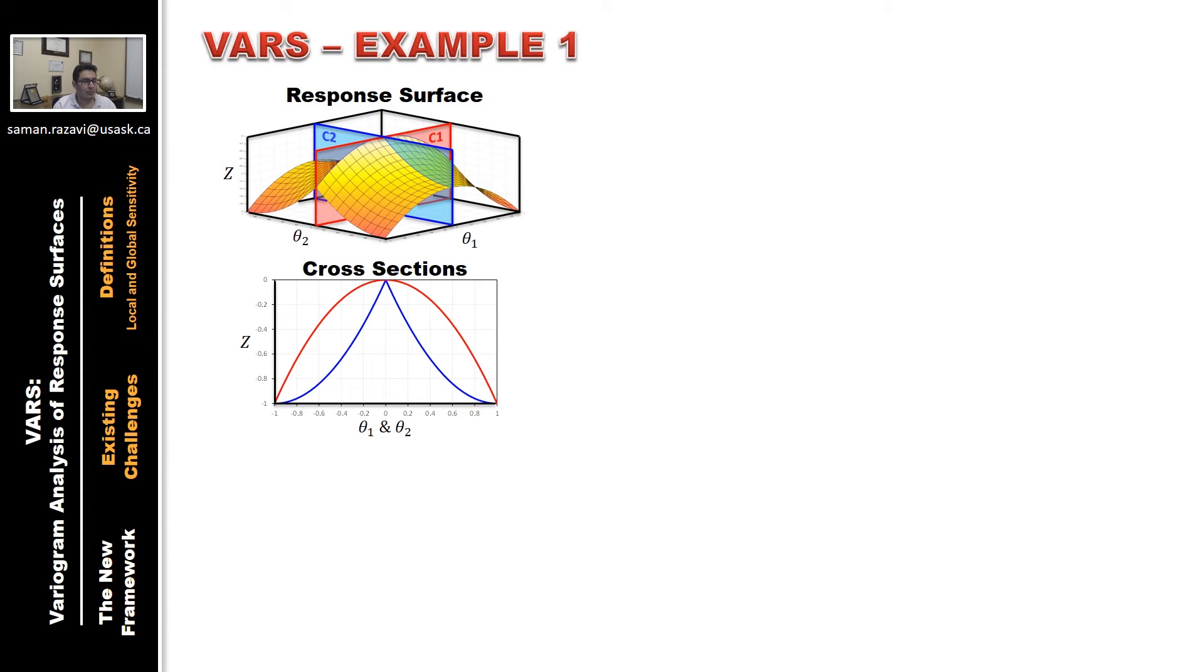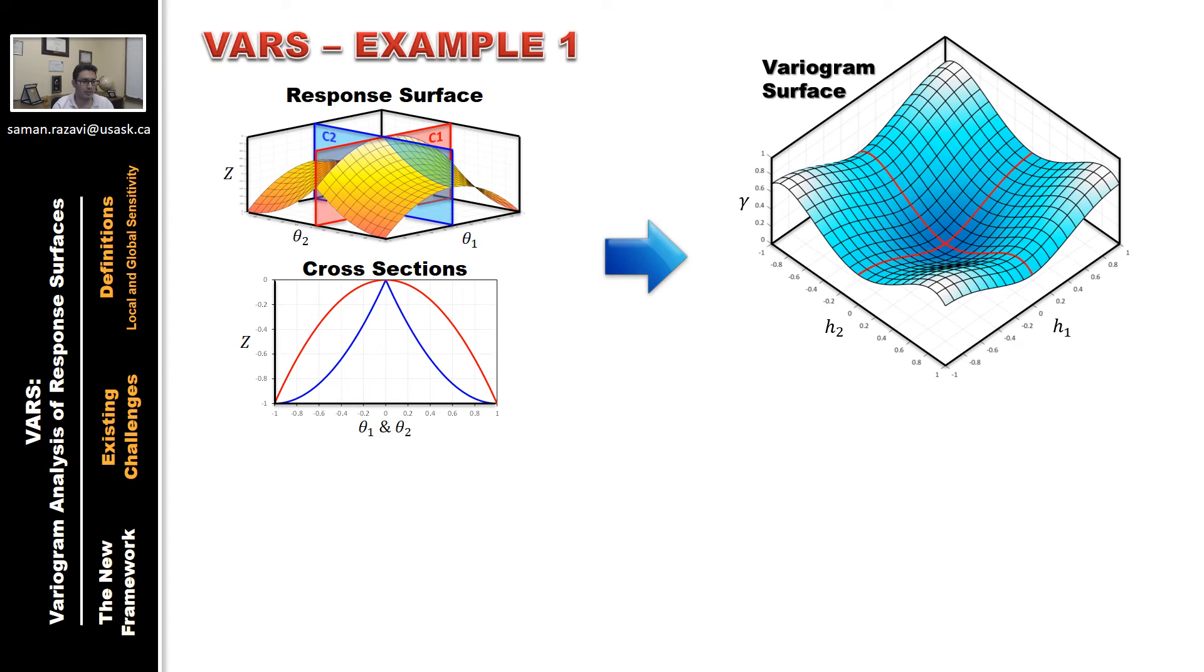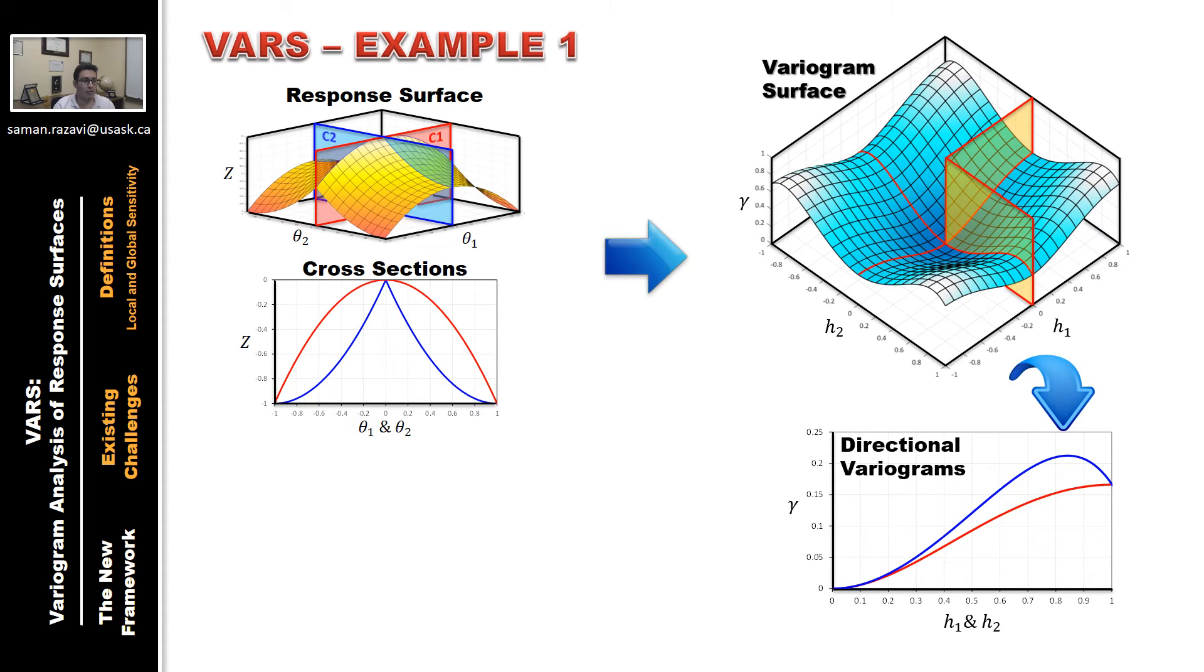Back to example one. Here is the response surface and cross sections. On the right, you see the variogram surface of this function, and we can get the directional variograms out as shown in the bottom. How do we interpret these in terms of sensitivity? It all boils down to the definition that the directional variogram represents the rate of variability or sensitivity for the direction of parameter i at the scale represented by vector h.